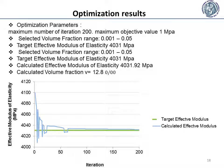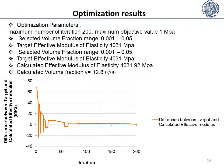This diagram shows the calculated effective modulus versus iteration. The optimization parameters for this case are 200 maximum iterations and 1 MPa maximum objective value. The final calculated volume fraction is 12.8 MPa and the calculated effective modulus is 4031 MPa. This diagram shows the difference between the calculated effective modulus and the target effective modulus versus iteration.